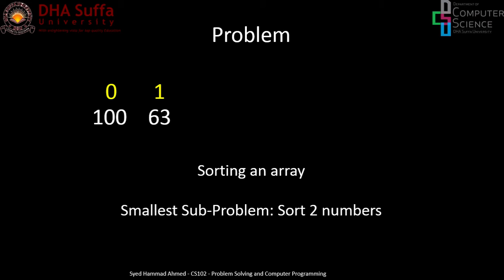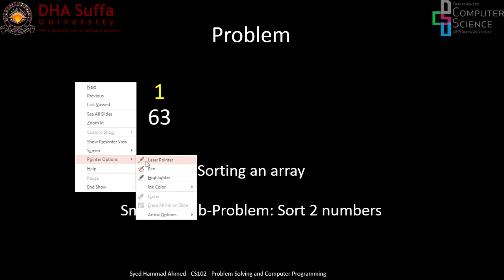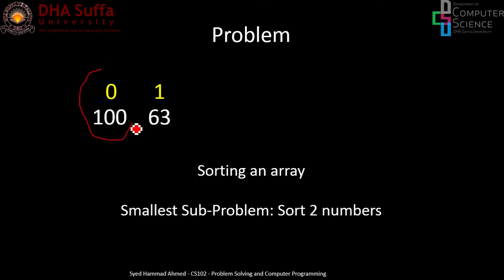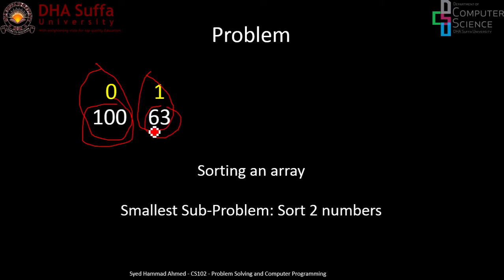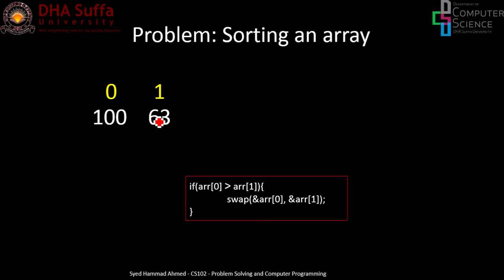The first number is 100 at index zero and the second number is 63 at index one. If the first number is greater than the second number, they need to swap places. The simple code for this sub-problem is: if ARR[0] is greater than ARR[1], then swap ARR[0] and ARR[1]. The code inside the red box is the solution for sorting two numbers.